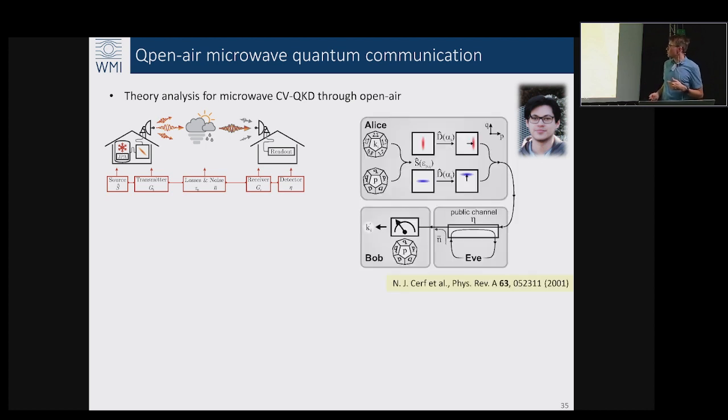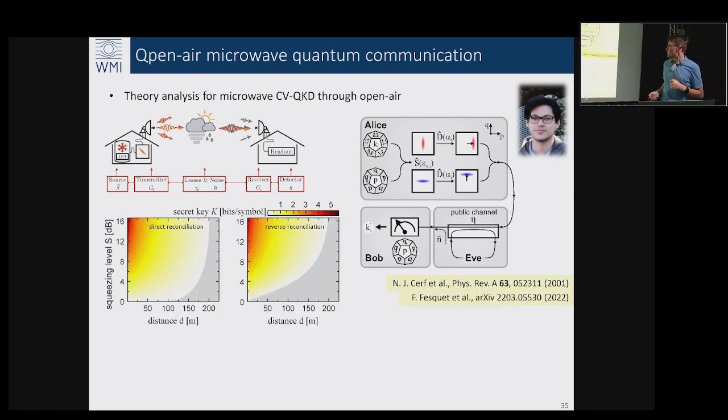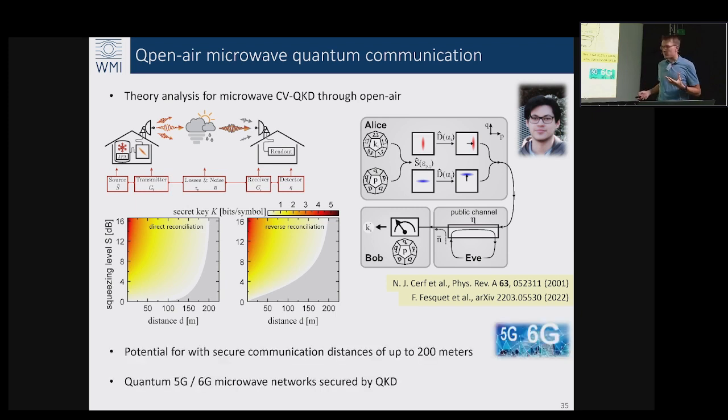This is work which was started with Florian Feskit already some years ago during his master thesis where we took this relatively known quantum optics paper which describes a very basic CVQKD protocol based on squeezed and displaced states which are sent through the public channel and simply offers the analytical tools how to estimate their unconditional security. When we put all the numbers in, we found out that such a protocol would be secure in open air conditions at microwave frequencies up to the distances of roughly 200 meters, which were already very exciting results.